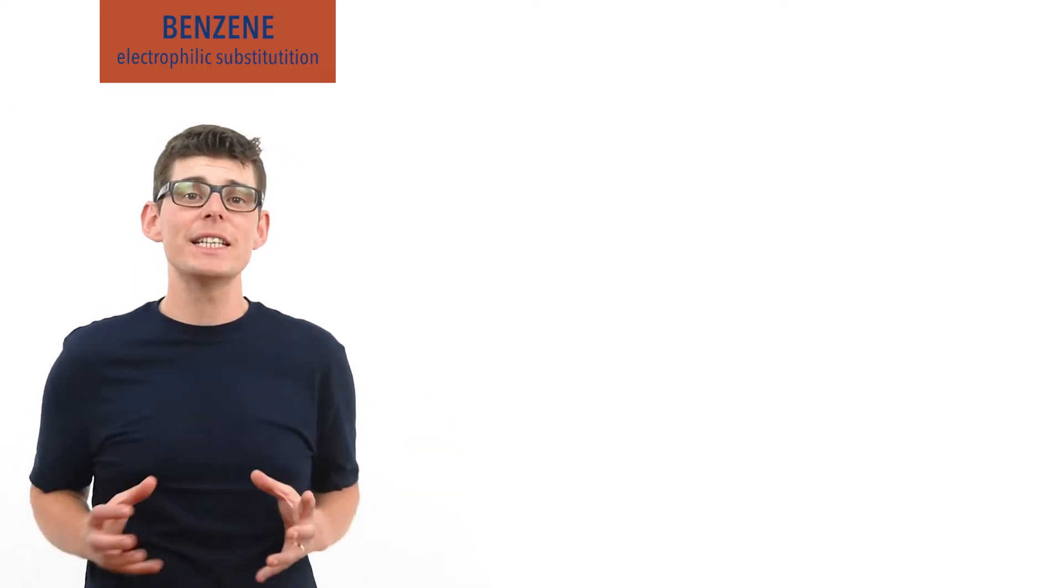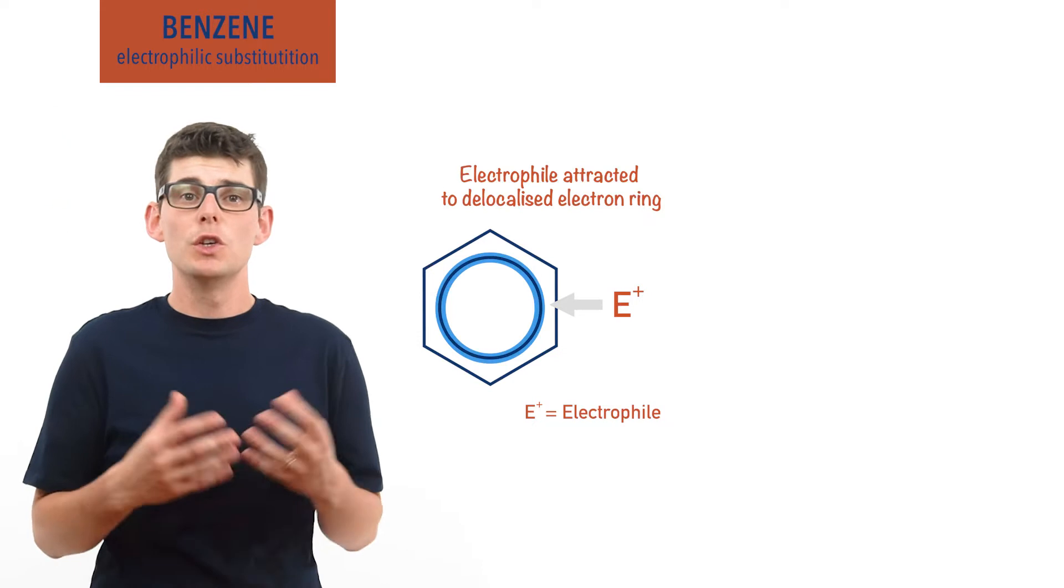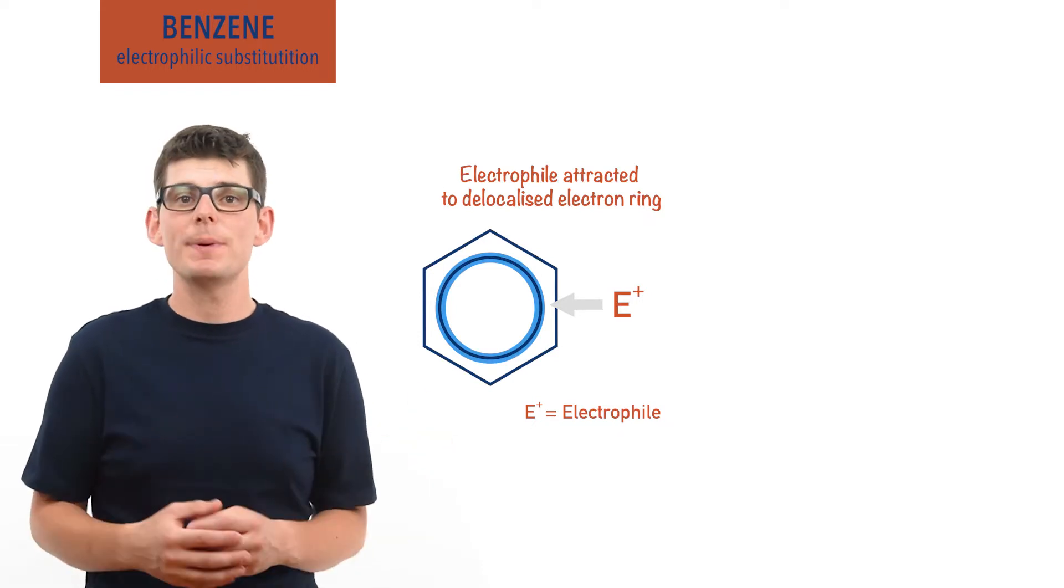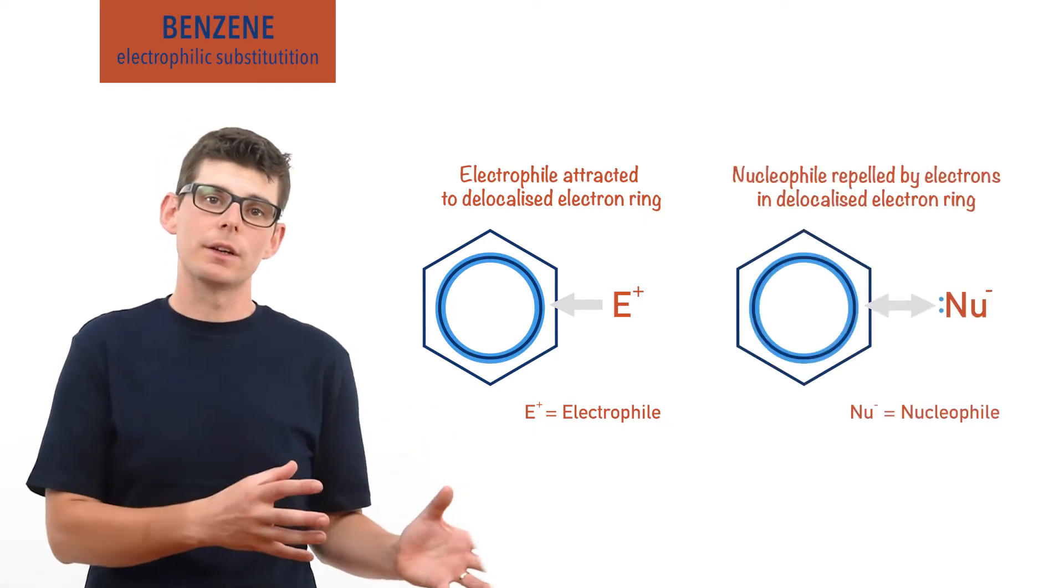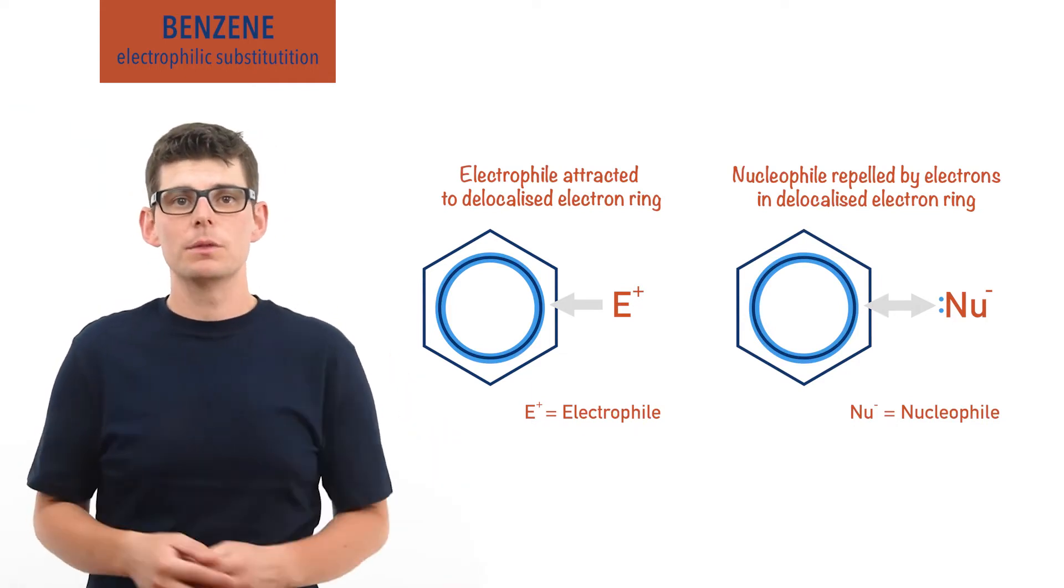So, electrophiles are attracted to the delocalized electrons in the pi bonding system in benzene. Nucleophiles or negatively charged species would be repelled by the delocalized electrons and this is why benzene will react with electrophiles rather than nucleophiles.